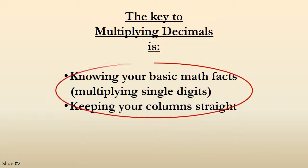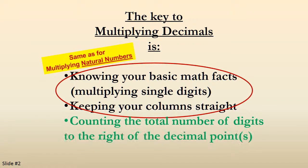Wait a minute. This all sounds a little familiar. Oh, that's right. It's the same as multiplying natural numbers. That may be numbers without decimals. The only difference is counting the total number of digits to the right of the decimal points. That's the new thing.